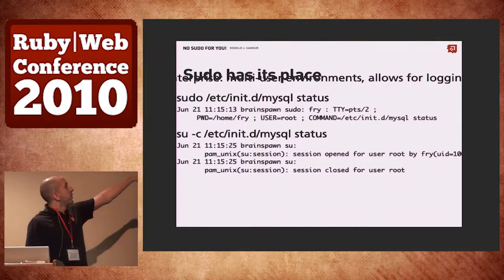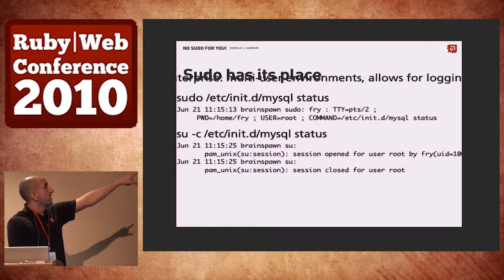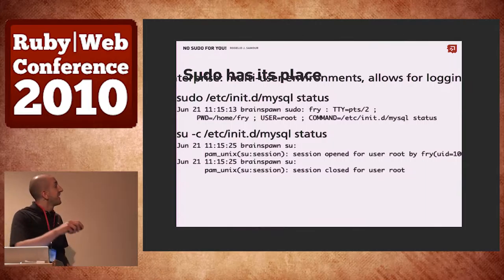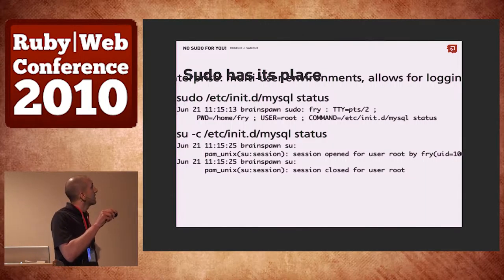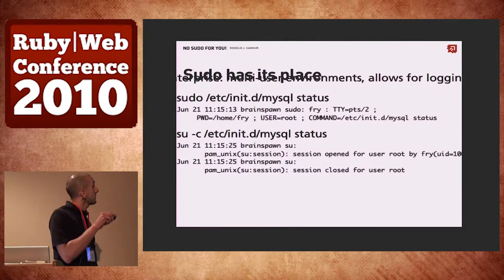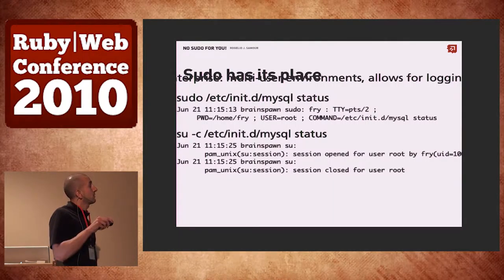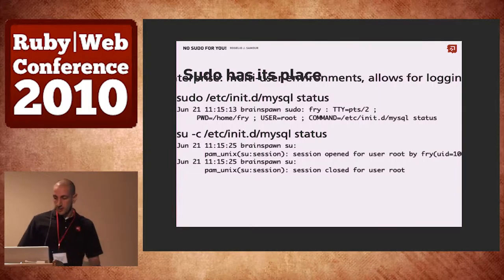Up there it says the first one is with sudo — so it's telling you that the user fry was running it. He ran the command mysql status. So you know that it was fry, and you know that he ran this command as root. With the other one, all you know from the logs is that user fry ran something as root, but not what it did. So it's not entirely useless, right?